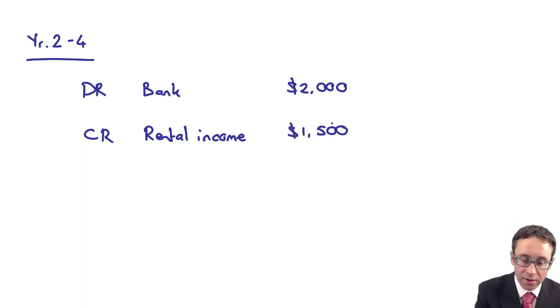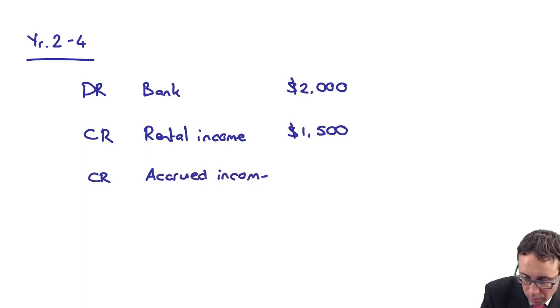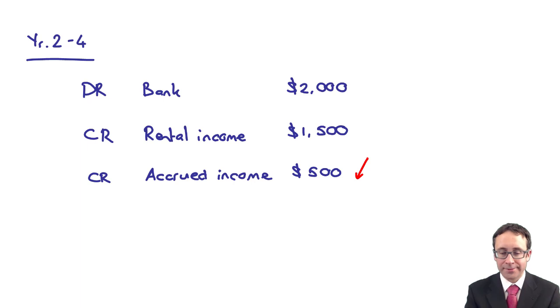With $1,500 and then what we do each year is we credit our accrued income with $500 and what that does, that credit will reduce the accrued income.